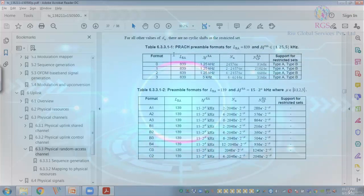These two tables represent the preamble formats. We have two types of preamble formats. Table 6.3.3.1.1 represents long preamble and table 6.3.1.2 represents short preamble. These are short preamble formats, these are long preamble formats. Long preamble formats are similar to what we used to have in LTE.